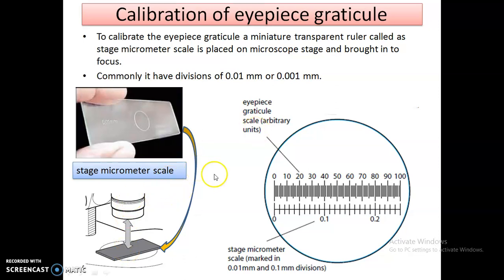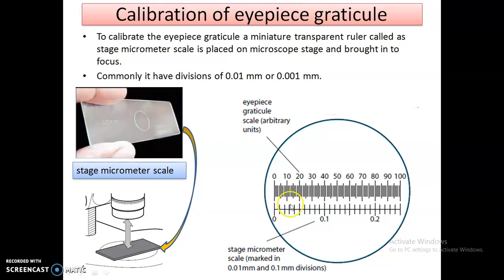When we look through the eyepiece lens, we can see that the eyepiece graticule and the stage micrometer scale lie together in the same field of view. This stage micrometer scale has divisions equal to 0.01 mm or 0.001 mm. As indicated on the miniature transparent ruler shown in the image, the division here equals 0.01 mm. We can see the eyepiece graticule divisions from 0 to 100 alongside the stage micrometer.